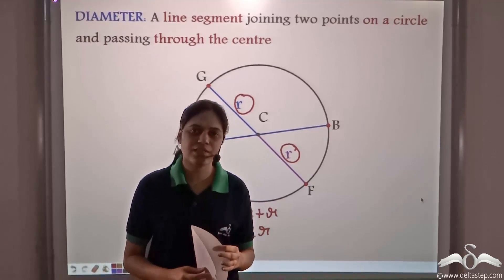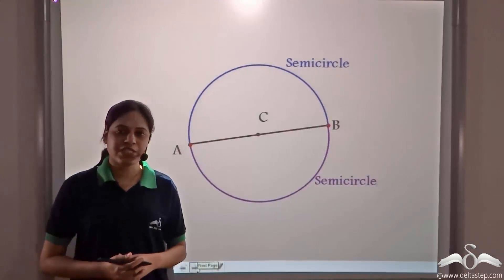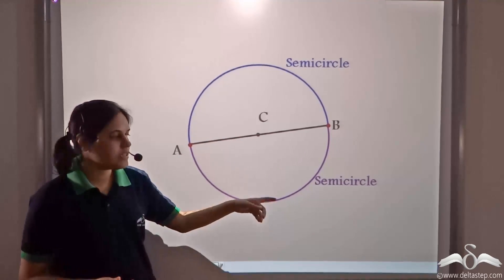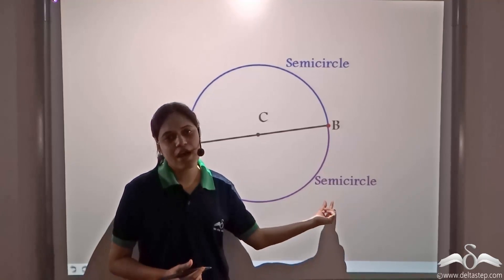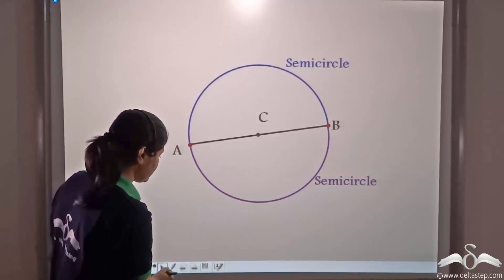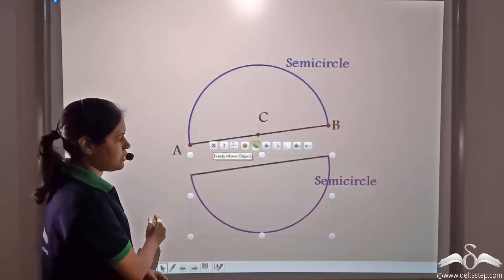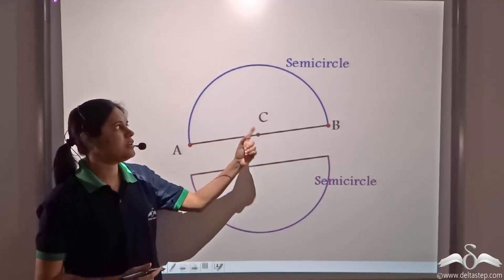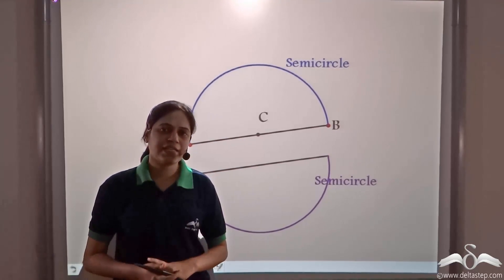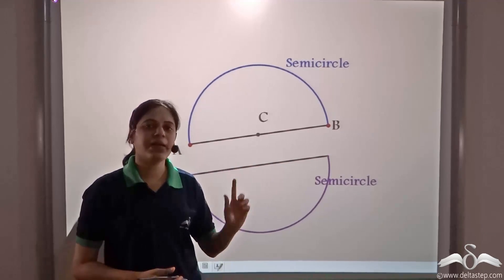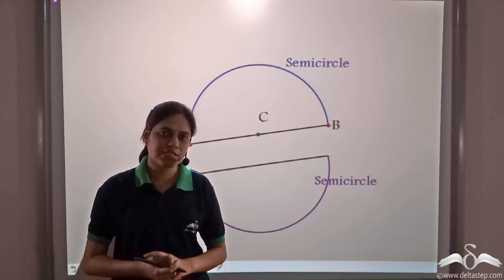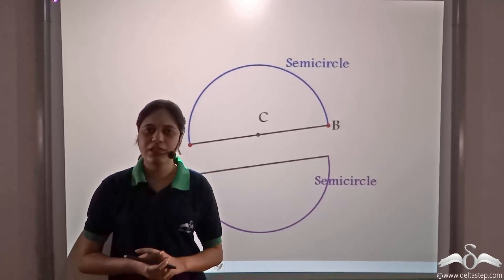A diameter divides the circle into two equal parts, and each of the equal parts is called a semi-circle because 'semi' means half. So a diameter divides the circle into two semi-circles. To summarize: a line segment joining two points on the circle and passing through the centre is called the diameter of the circle. The length of the diameter equals twice the radius, and it divides the circle into two equal parts.